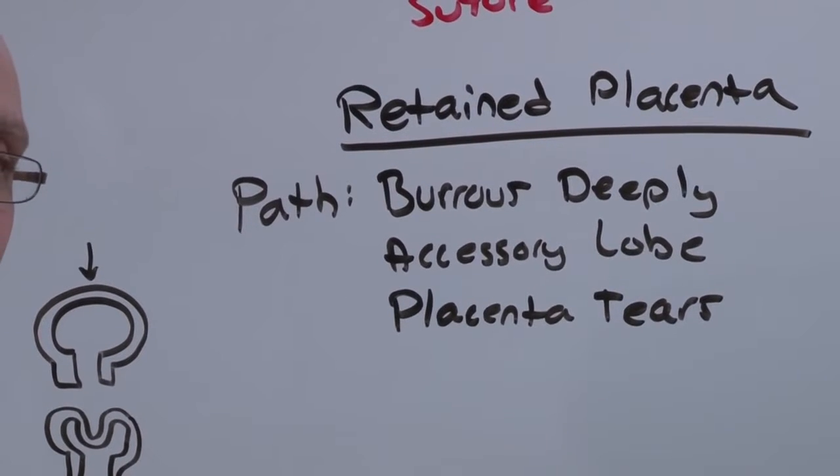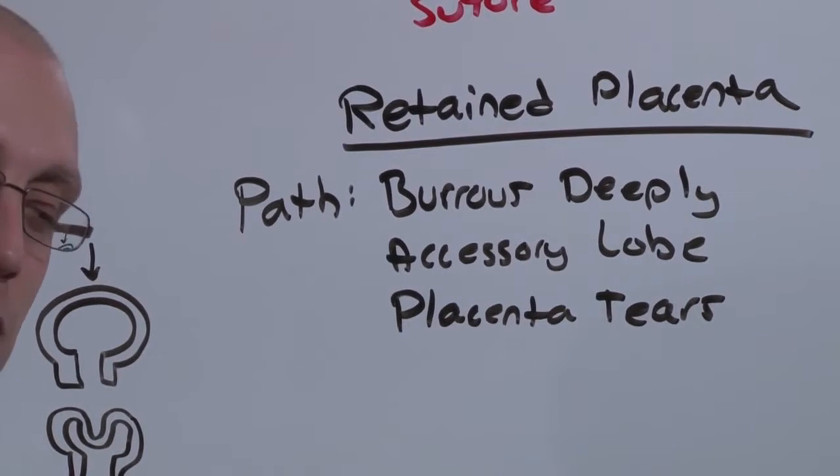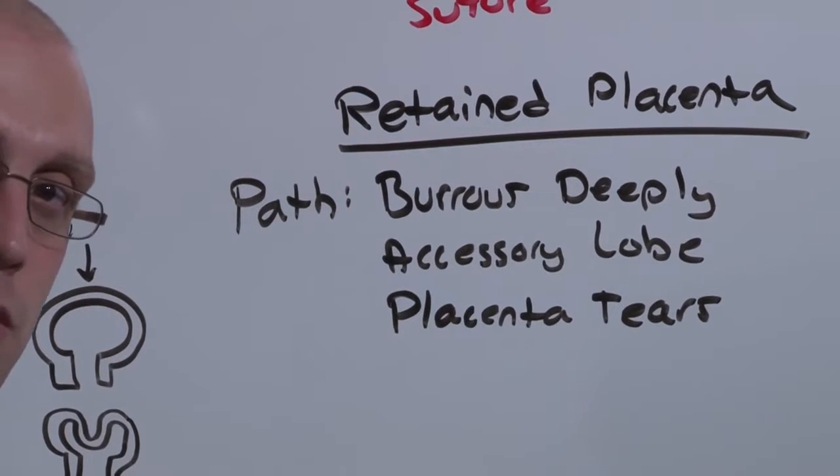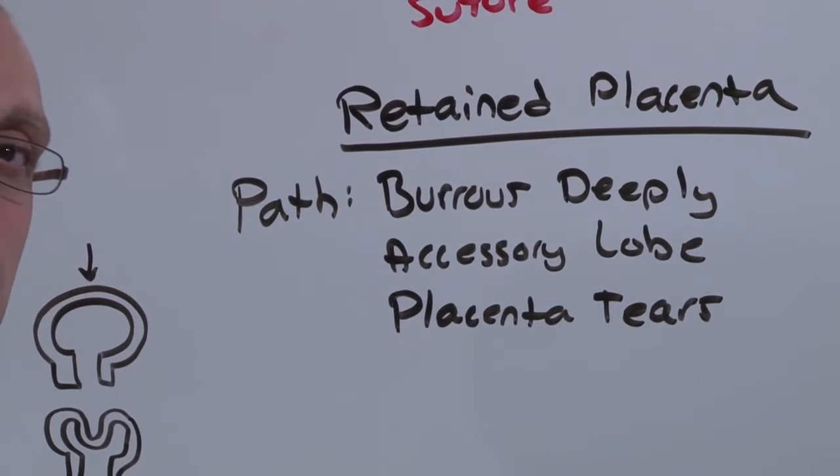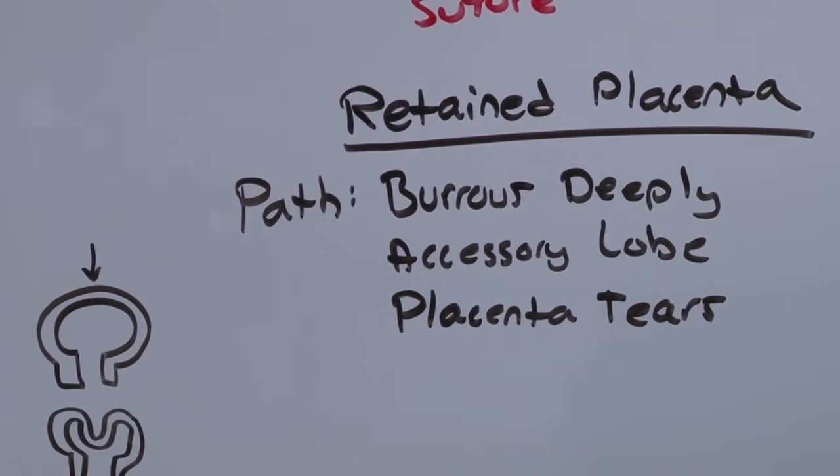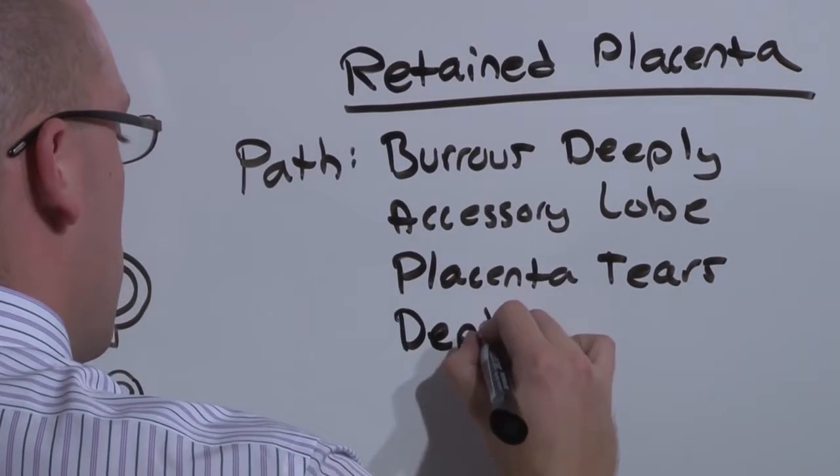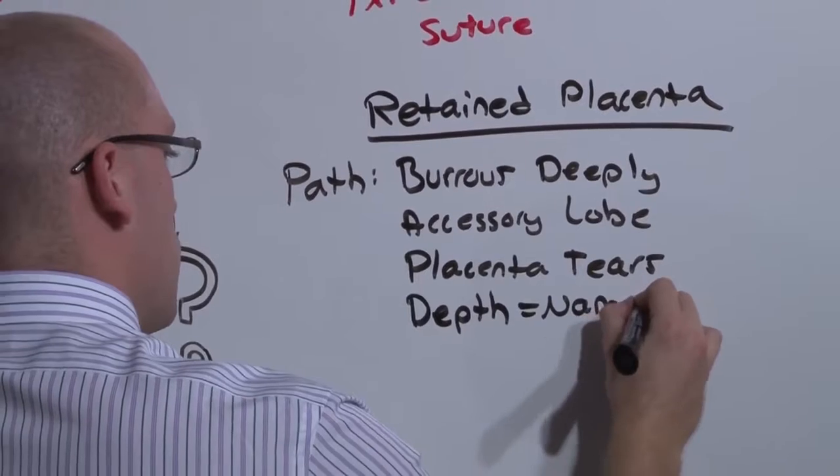And remember, the placenta's job is to bore into the uterus to steal mom's blood supply and to deliver that blood to baby. If you tear it, those blood vessels are bleeding freely, but they're still attached to mom. So they're still leaching mom's blood, just bleeding into her uterine cavity. And the depth of the burrow is how you name the retained placenta.